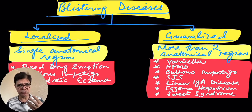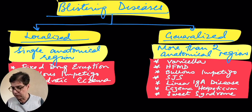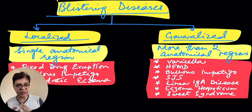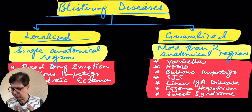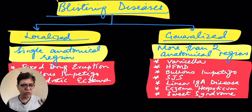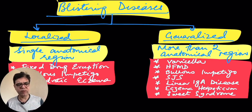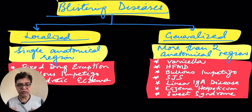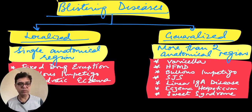Moving on to generalized vesicular rashes — the list is not exhaustive, but going through the common ones: varicella or chickenpox, whether it's a primary infection in the form of varicella or a reactivation in the form of herpes zoster. Herpes zoster usually tends to occur on a localized basis, following a dermatomal pattern along the path of the nerve. The primary infection — varicella — usually presents with a papulovesicular rash.